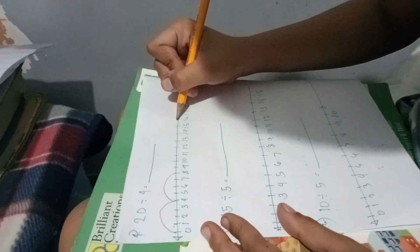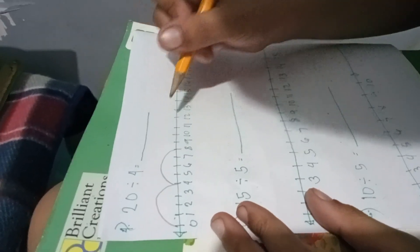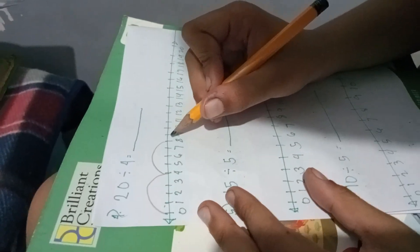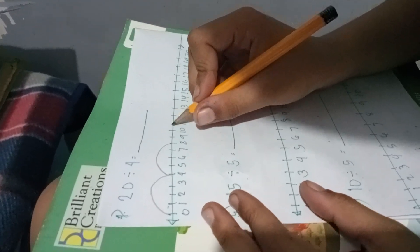So he started now to answer. Our problem is 20 divided by 4. This is called a division process through applying number lines.